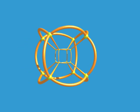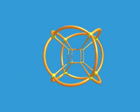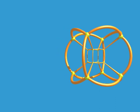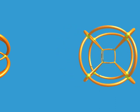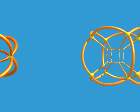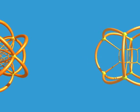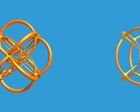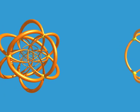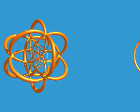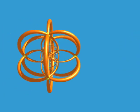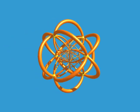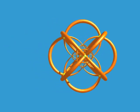Here's the hypercube. It's easy to recognise it from its 32 edges and its 16 vertices. Seeing things this way is so much easier than with the shadow method or the three-dimensional cross-sections. Here's the 24-cell, with 24 vertices and 96 edges.